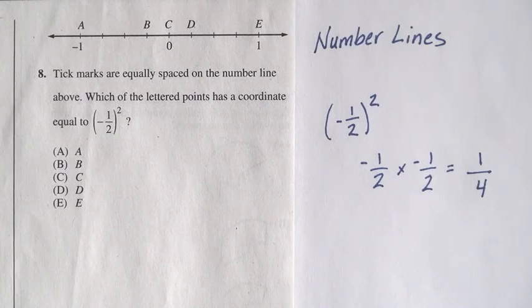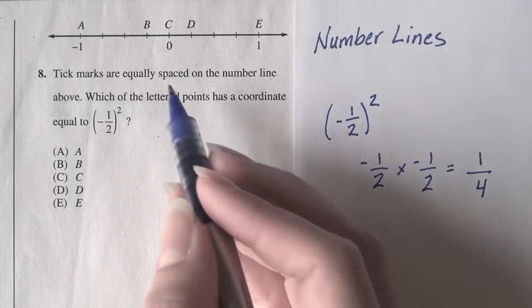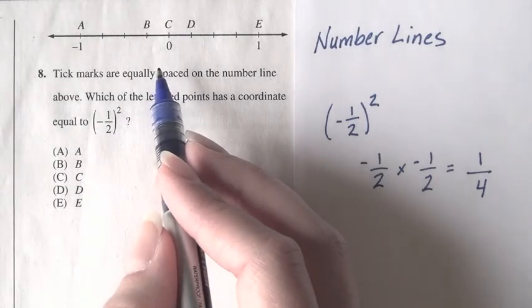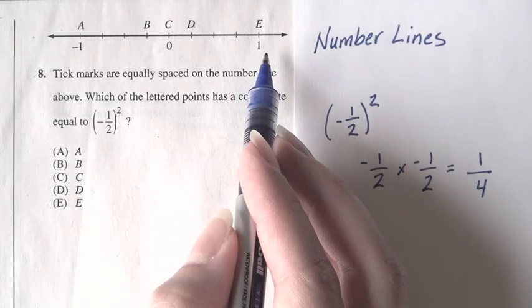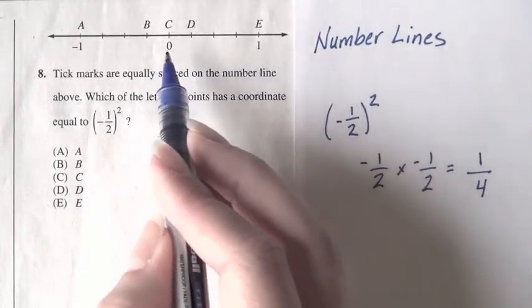So now the only job left is to figure out which point on the number line corresponds to 1 fourth. When you're looking at number lines, make sure you're paying lots of attention to the scale. Here's 0 and here's 1, so this is all the space between 0 and 1.